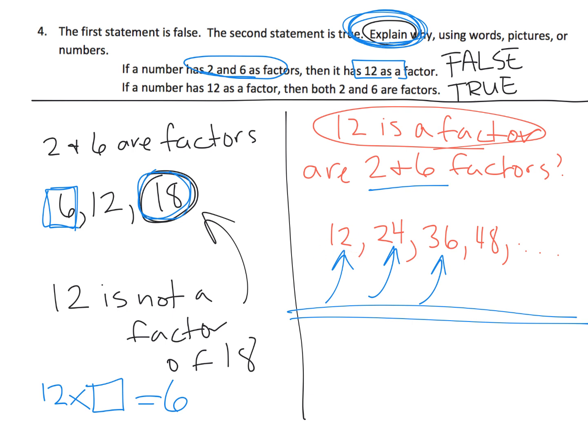And then you could think of this 24 as 12 times 2. You could think of that 36 as 12 times 3, etc.